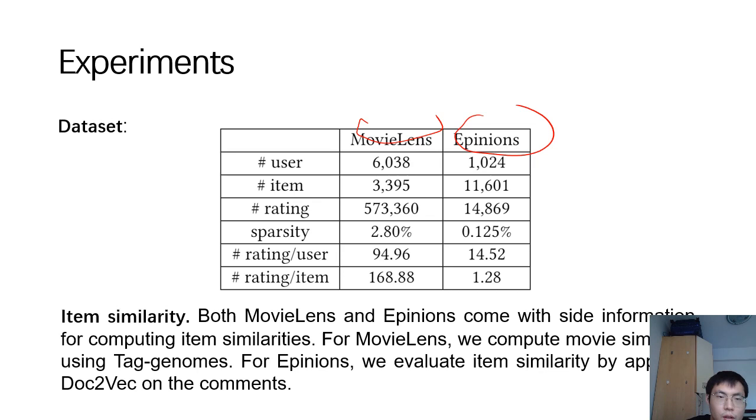For the item distance d_ij, here, we can derive the distance from side information.